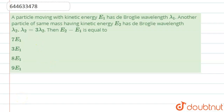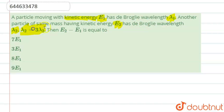Hello students. Now we're going to see this question — it's a very easy question. A particle is moving with kinetic energy E₁ and has a de Broglie wavelength of λ₁. Another particle with the same mass has energy E₂ and de Broglie wavelength λ₂, where λ₂ is equal to 3 times λ₁.